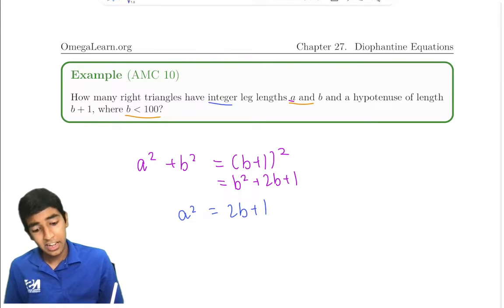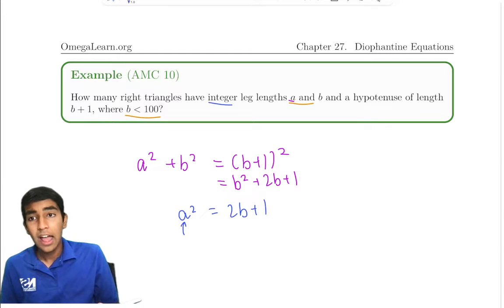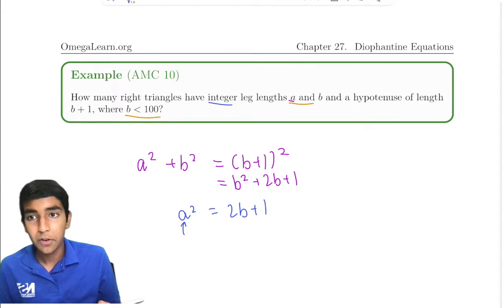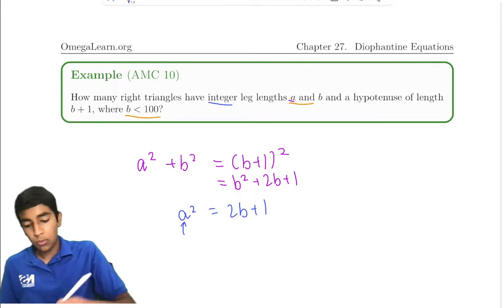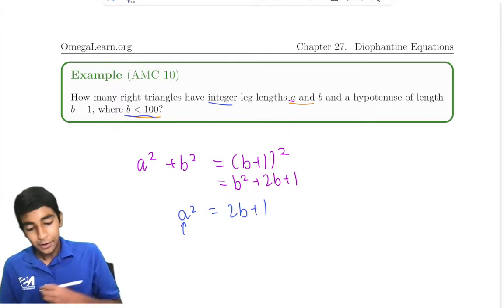The legs are integers. And integers, that's very useful information, because now we know that a can't be a fraction or decimal. So we don't have to solve the equation. Rather, we can find out which values work with their condition b is less than 100.